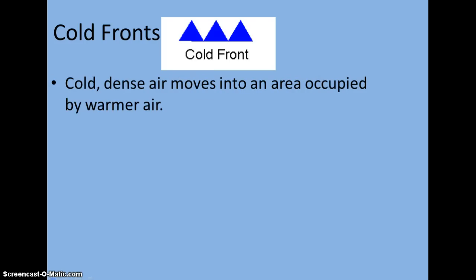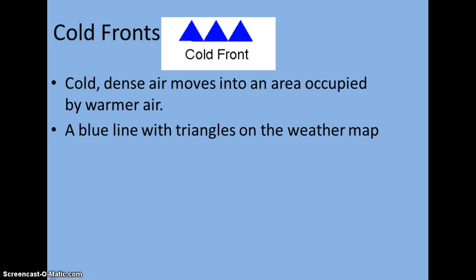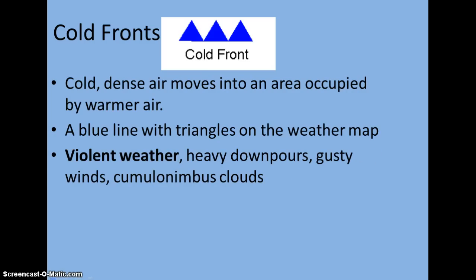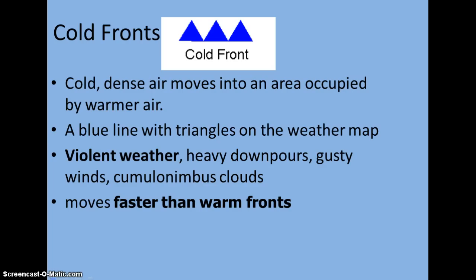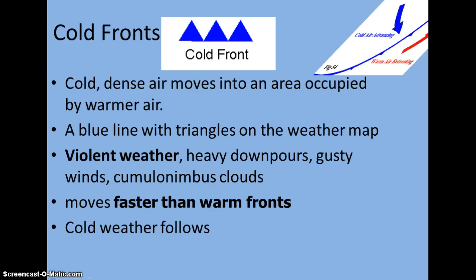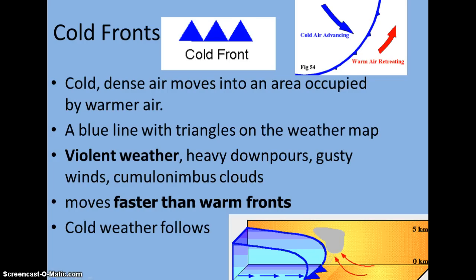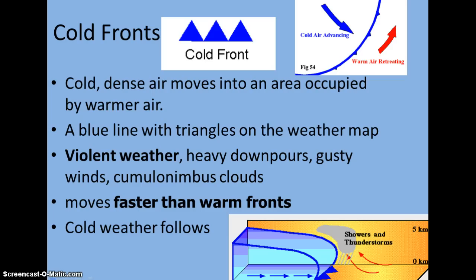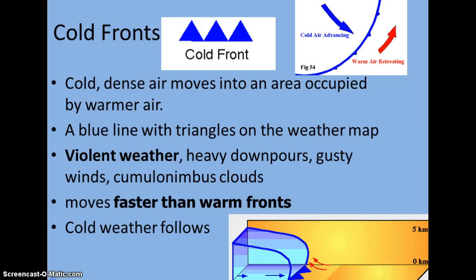Cold fronts are the opposite — when cold dense air moves into an area occupied by warmer air. On a weather map this is symbolized by a blue line with blue triangles on one side, pointing in the direction of movement. With cold fronts you can expect violent weather: storms, heavy downpours, a lot of winds, and those cumulonimbus thunderclouds. Cold fronts move faster than warm fronts, which is why we have much more violent weather — since they move through quickly they force warm air upward much faster, giving that vertical cloud development you can see in the diagram in the bottom right corner. After the cold front passes, we then get cold air and cold weather.